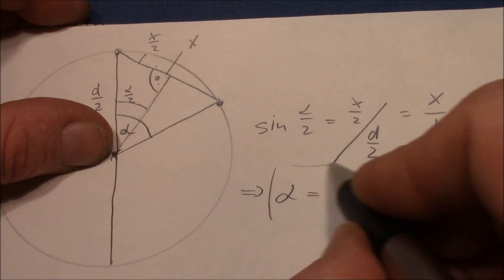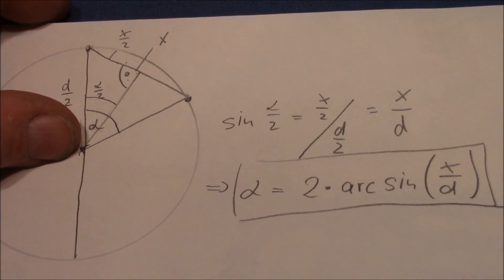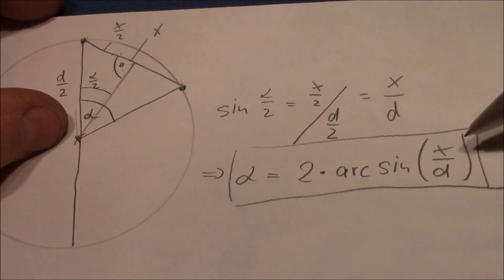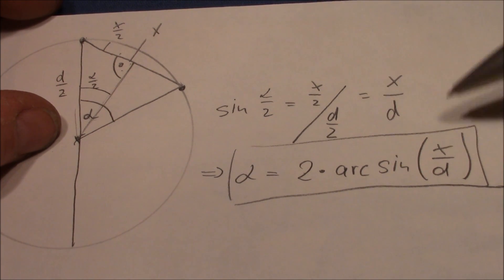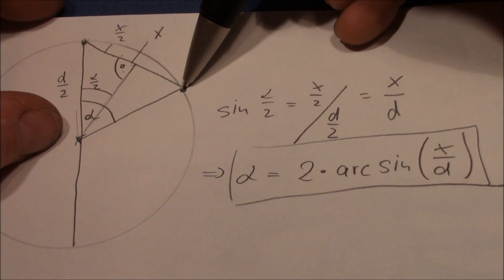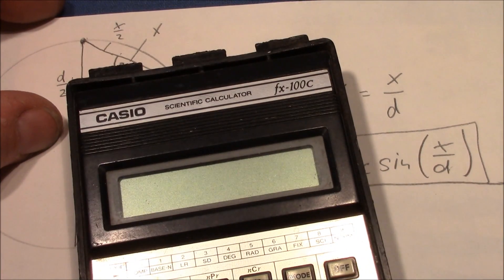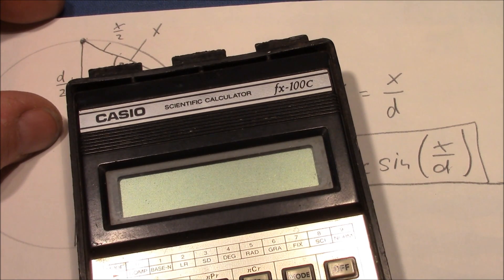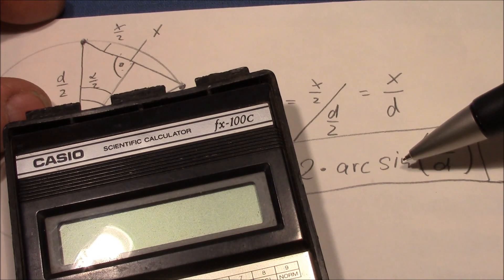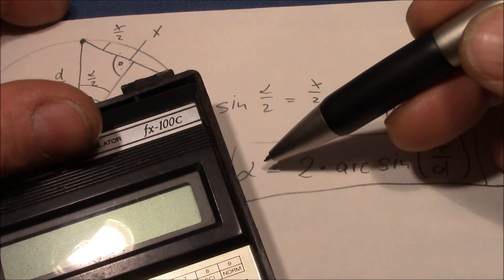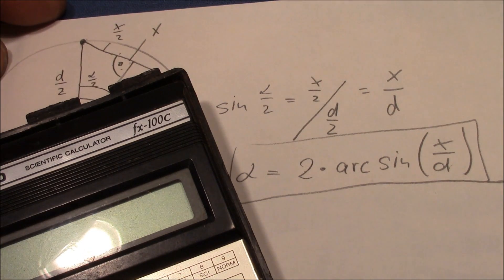That's the equation to calculate the false set angle by the given values of the distance between the two marks on the plug and the diameter. You simply need to have a scientific calculator or your mobile device with a calculator, or any other device that is able to calculate the inverse of the sinus, and you can simply calculate the angle.